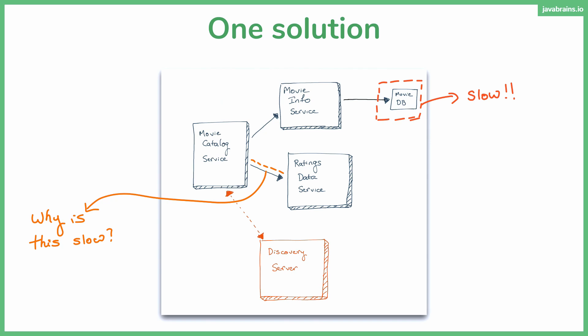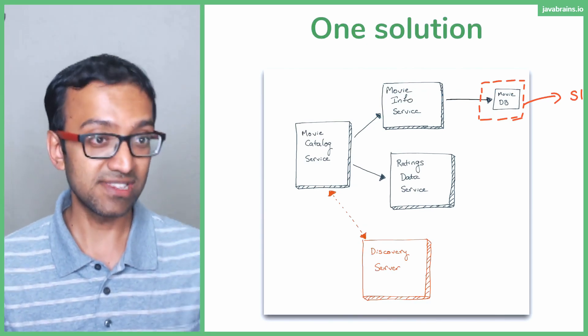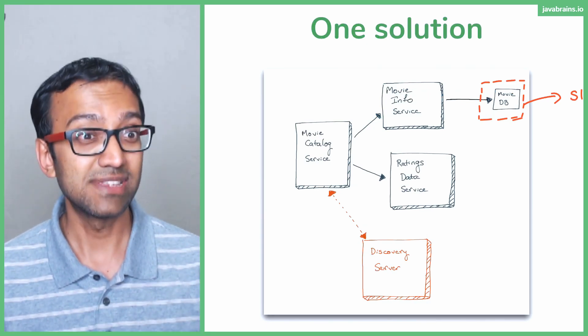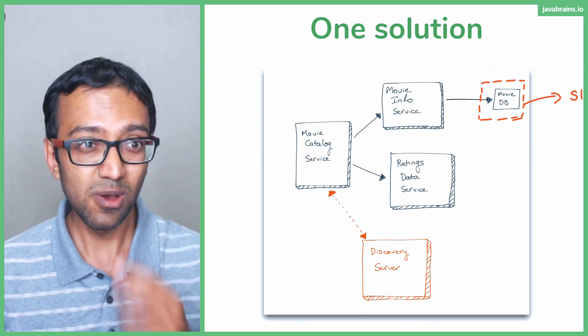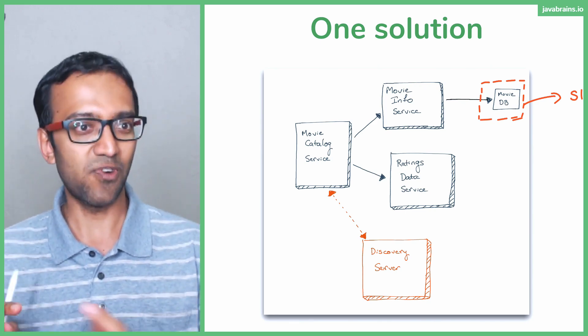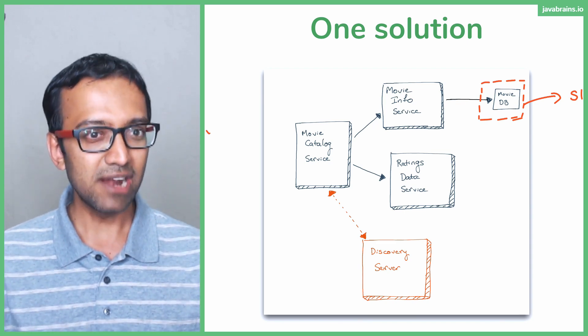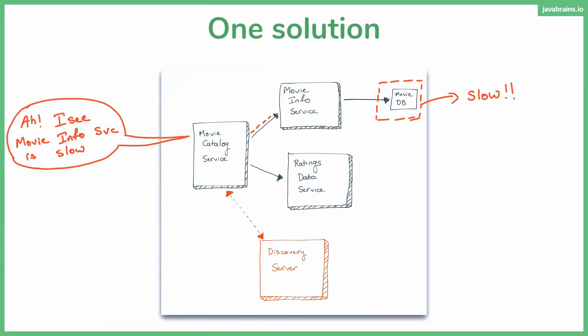Now, one solution could be to have the movie catalog service be a little smart. The movie catalog service can say, I'm sending so many requests to this guy, but this guy is not responding on time. He's taking a lot of time. So rather than continue to send requests and eventually run out of resources for some of the other faster microservices, what I'm going to do is I'm going to be a bit smarter. I'm going to see what is the service that's being slow. I'm going to detect it. I'm going to say, oh, I see the movie info service is being slow.